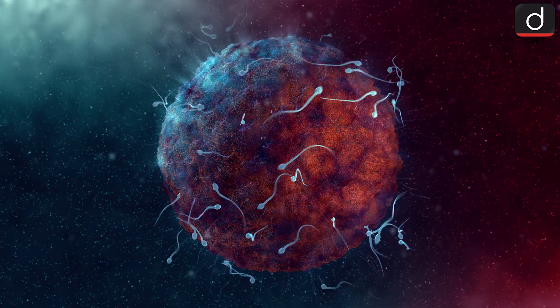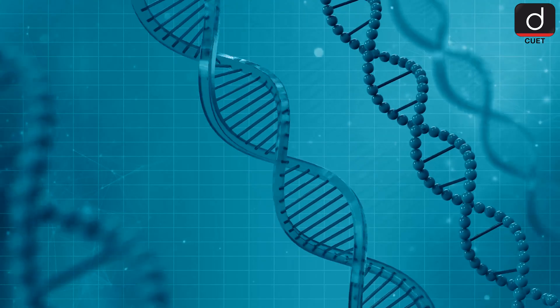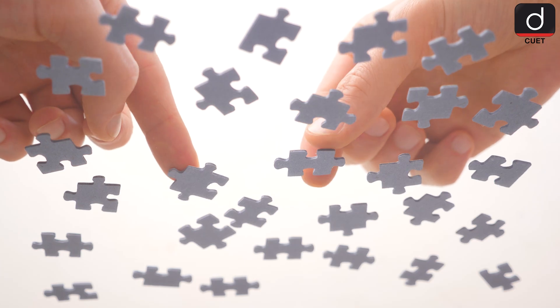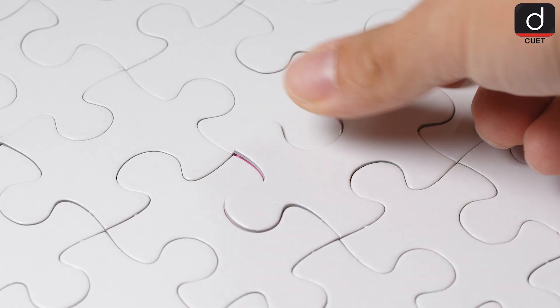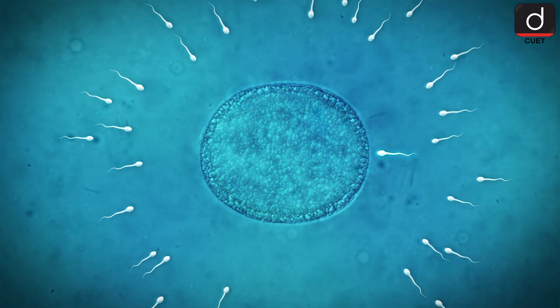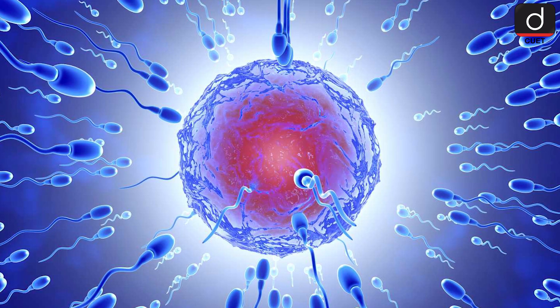In sexual reproduction, special cells called gametes are involved. There are two types of gametes: sperm from the male and eggs from the female. These gametes carry half the genetic information from each parent. Think of it like a jigsaw puzzle where each parent has half the pieces — when they come together, the pieces fit perfectly to create a complete picture. In humans, the sperm and egg meet to form a new life with a mix of traits from both parents.